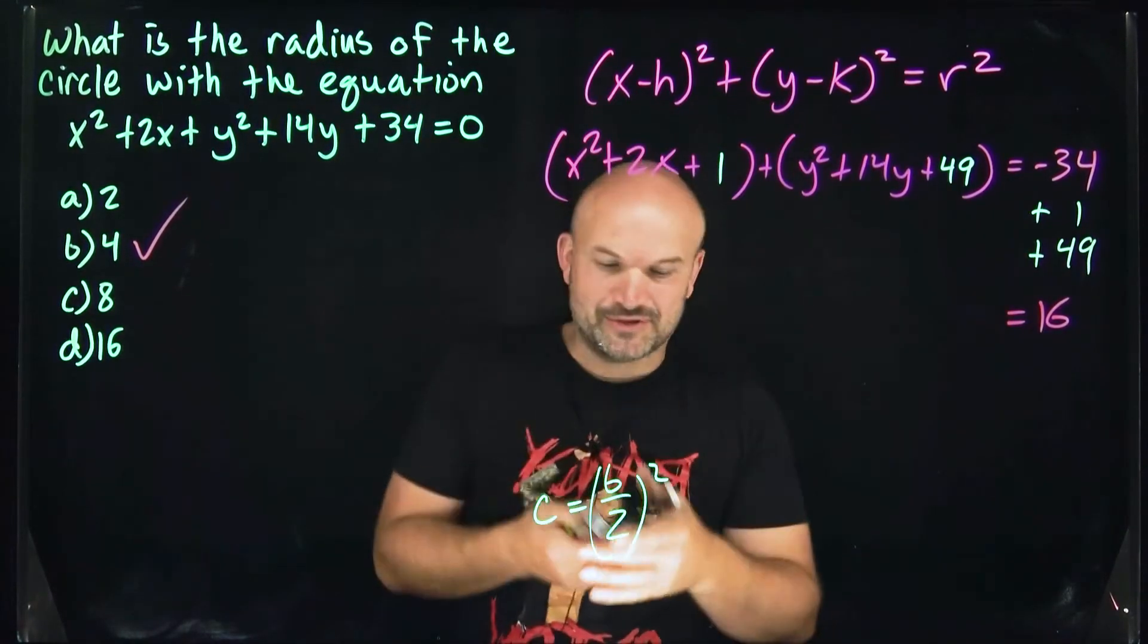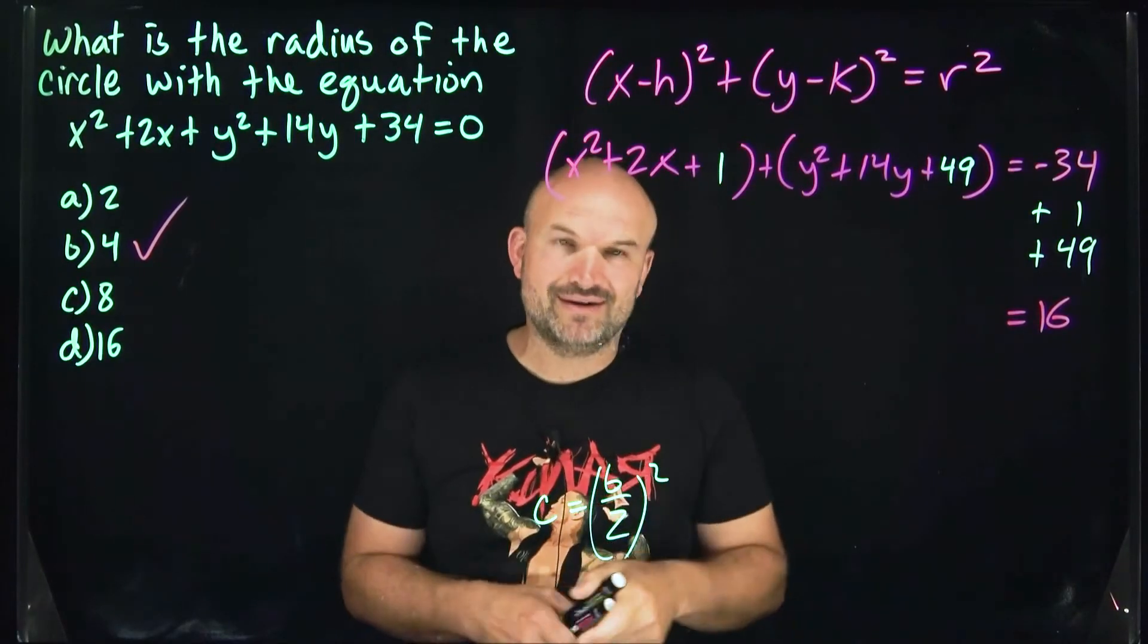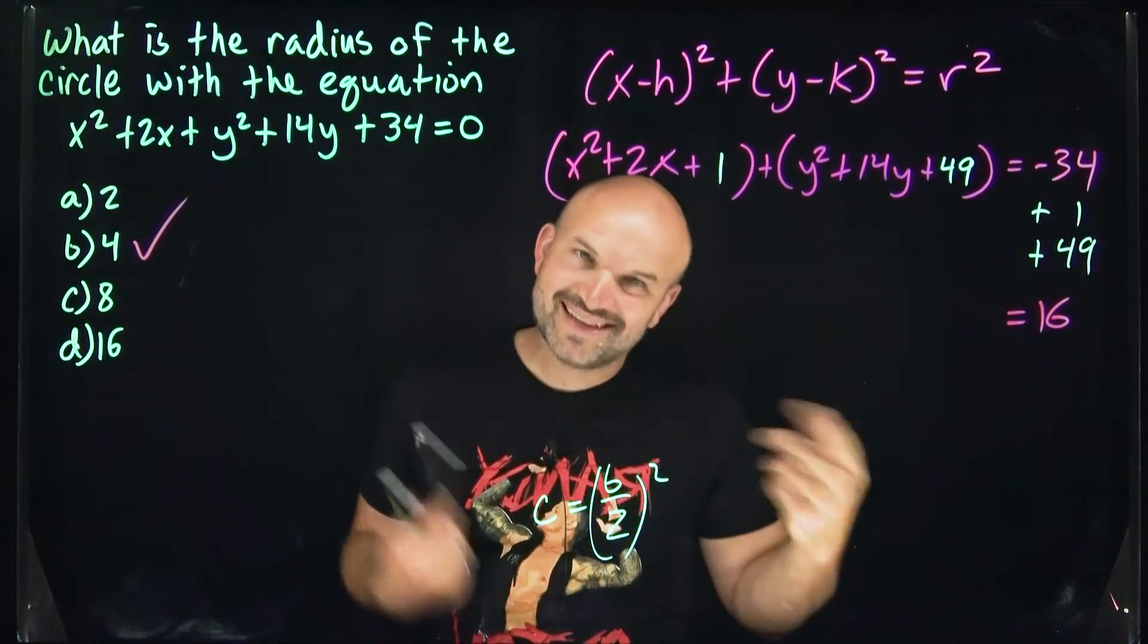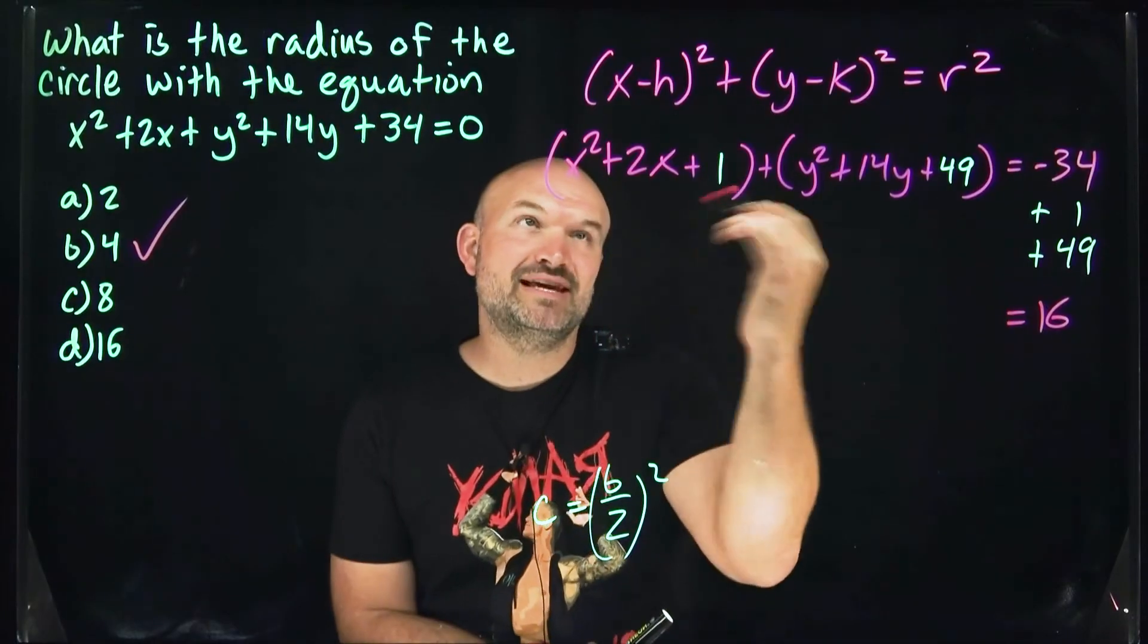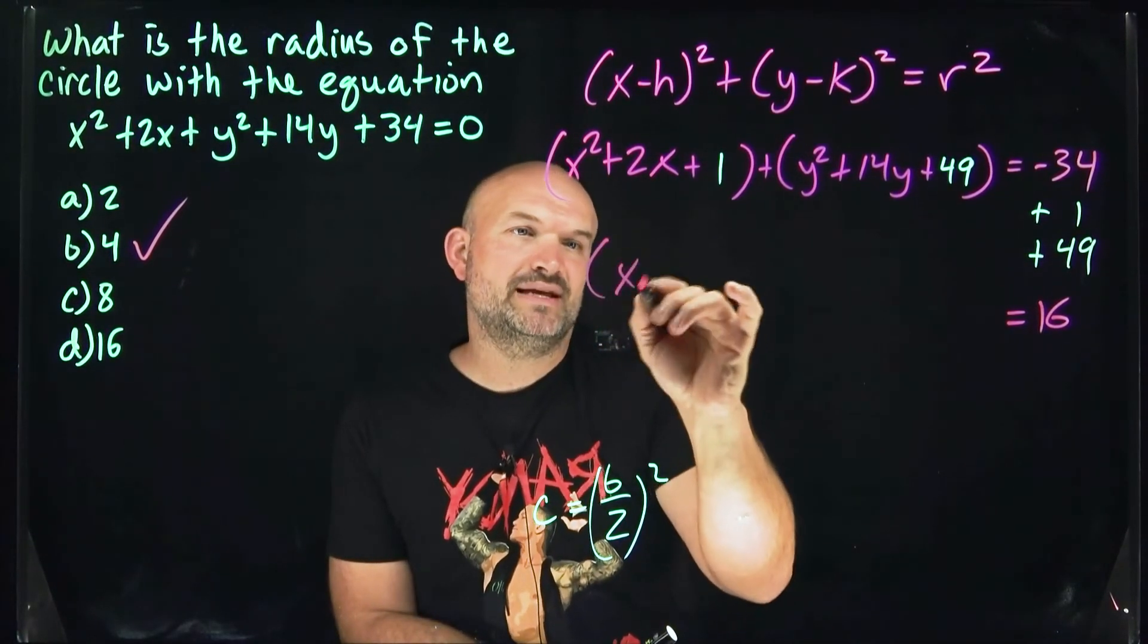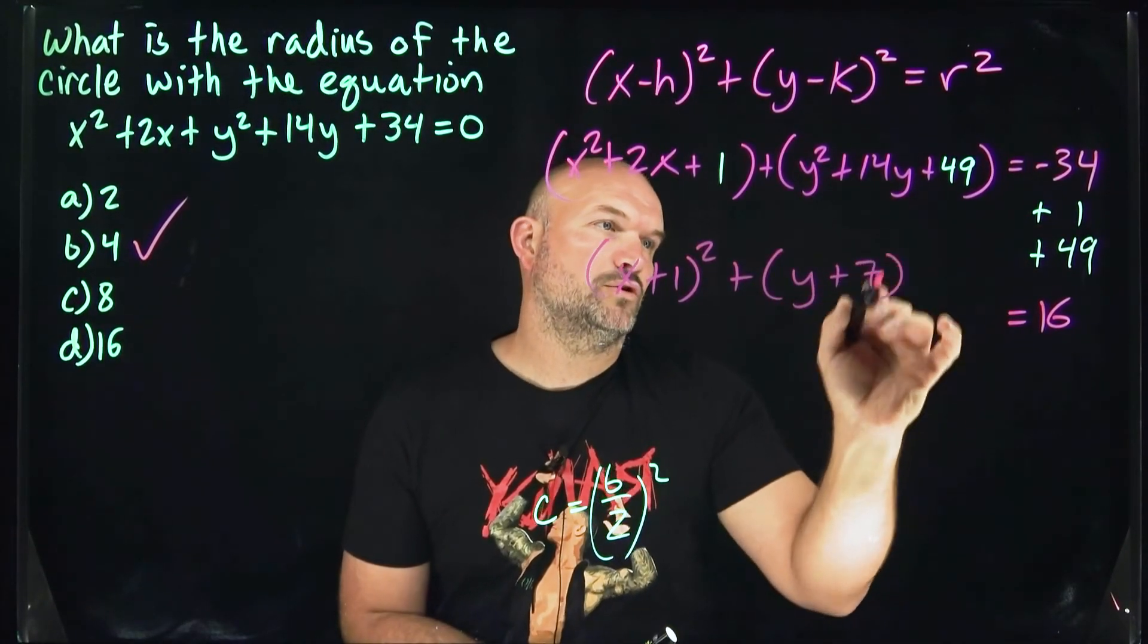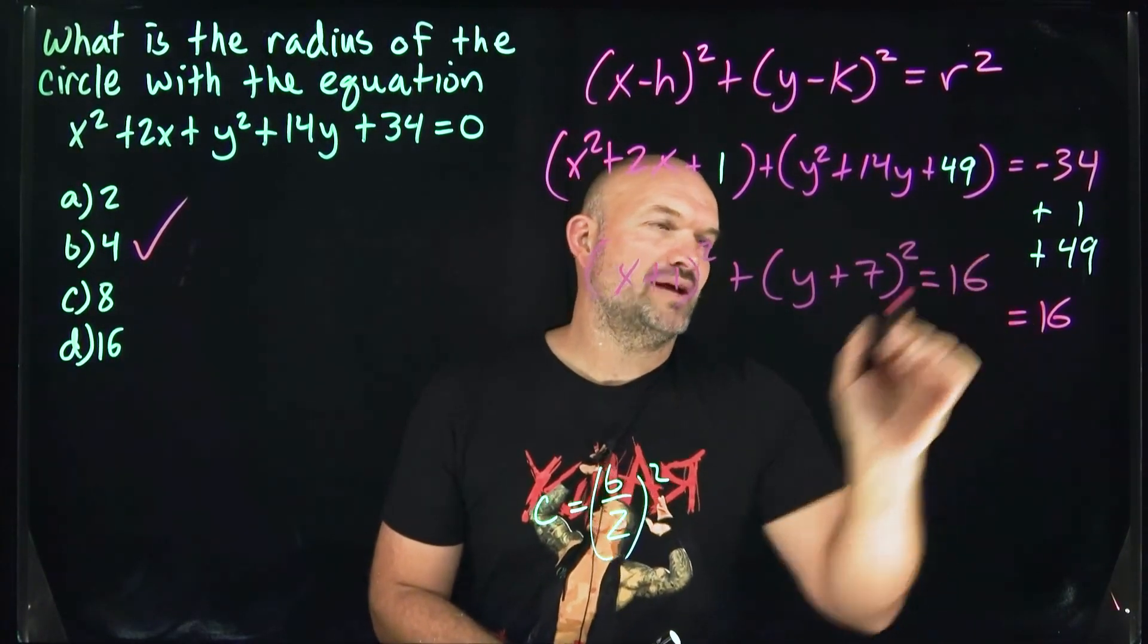If you're wondering how to complete this square, recognize these are binomial squares. Even though it's not part of the problem, let's do it. The standard form of this circle equation would be (x + 1)² + (y + 7)² = 16.